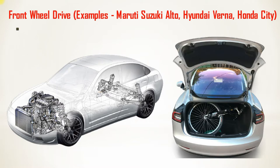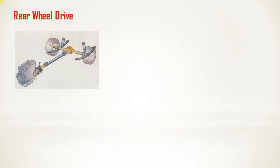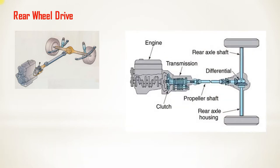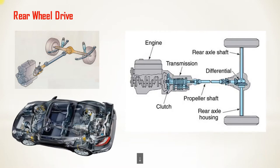Now we will discuss rear wheel drive. There are two options: the first option is the engine is mounted at the front and power is transmitted to the rear axle — this is called front engine rear wheel drive. The second option is the engine is mounted at the back and power is also transmitted to the rear axle — this is called rear engine rear wheel drive. First we will discuss front engine rear wheel drive.